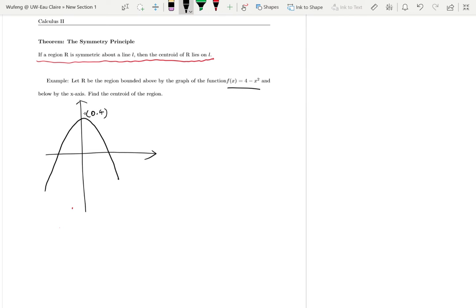And then this parabola is symmetric with the y-axis. Since f(x) equals 4 minus x squared is symmetric about the y-axis,